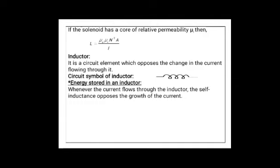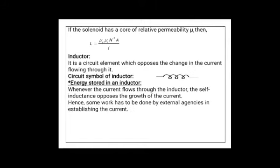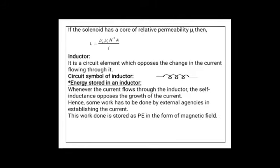Whenever the current flows through the inductor, the self-inductance opposes the growth of the current. Hence, some work has to be done by external agencies in establishing the current. When current flows through the inductor, the coil starts opposing the increase in current. Work has to be done by external agencies, and this work done is stored as potential energy in the form of a magnetic field.